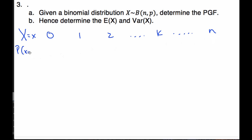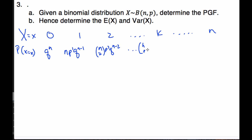The probability of having these successes, using the binomial theorem: for zero successes it's n choose zero, which is one, times p to the power zero, times q to the n. For one success it's n choose one, which is n, times p to the one, times q to the n minus one. For two successes it's n choose two, p squared, q to the n minus two, and so on. The kth term is n choose k, p to the k, q to the n minus k. And finally the last term is n choose n, which is one, times p to the n, q to the zero. This is the full distribution for all terms of the binomial.